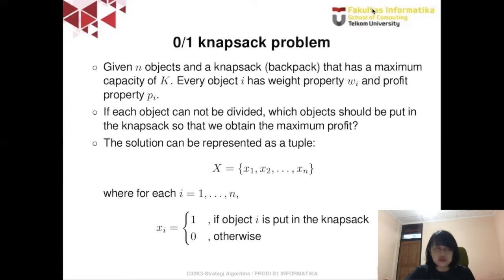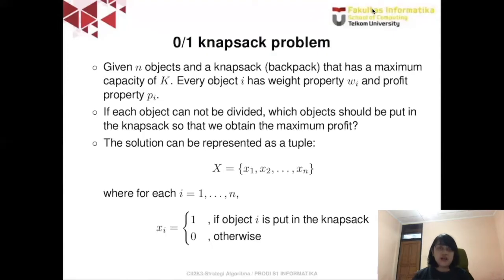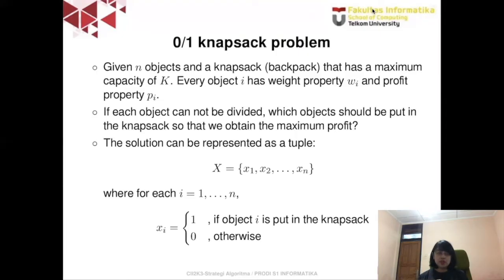You should already be familiar with the discrete knapsack problem. Basically we are given n objects and a knapsack with a maximum capacity of k. Every object i has a weight property wi and a profit property pi. Each object cannot be divided, which is why we call it the discrete knapsack or zero-one knapsack. We want to know which objects to put in the knapsack to obtain the maximum profit without exceeding the maximum capacity. The solution can be represented as a tuple, where x1 is 1 if object one is put in the knapsack, or 0 if it is not.